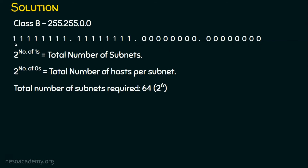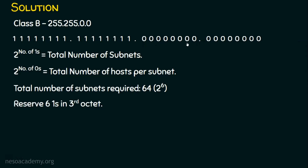We are going to reserve 6 ones starting from this position in the 3rd octet. Why from this place? Because it's a class B subnet mask — the first two octets remain unchanged, and bit modifications while subnetting occur only in the 3rd and 4th octets. For a network requirement problem, we reserve ones starting from the left of the host portion, so we reserve 6 ones in the 3rd octet.